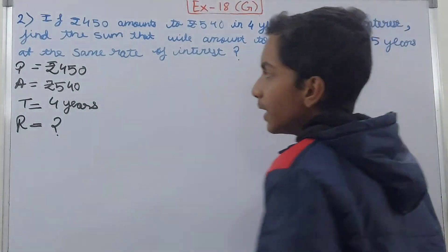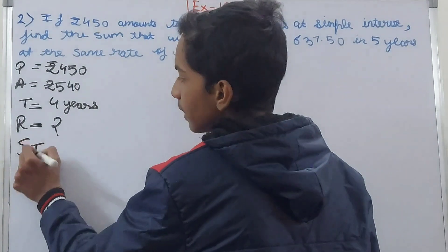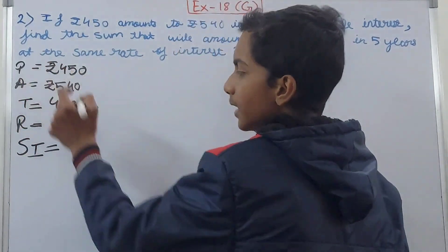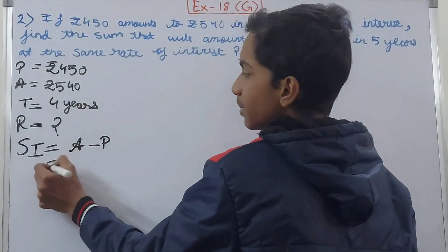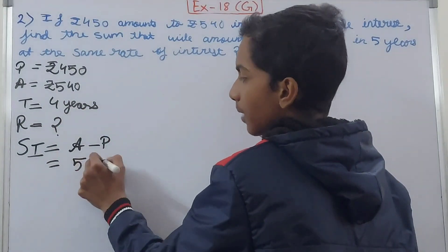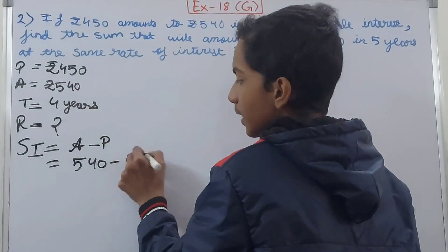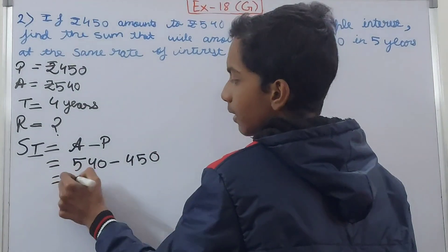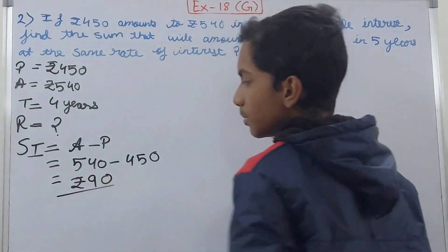So we will calculate the simple interest first of all. We will calculate the simple interest, that is amount minus the principal. So this becomes amount is ₹540 minus ₹450, and that will be ₹90. This becomes our simple interest.